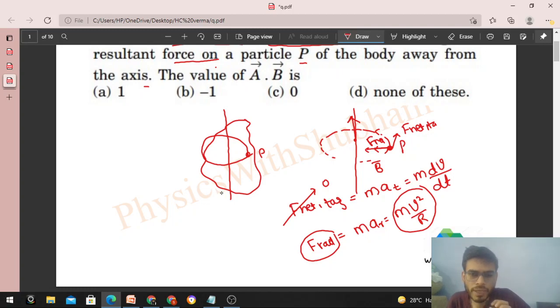This is your vector A and this is your vector B in radial direction. So angle between them will be 90 degrees, so A dot B will be equal to zero.